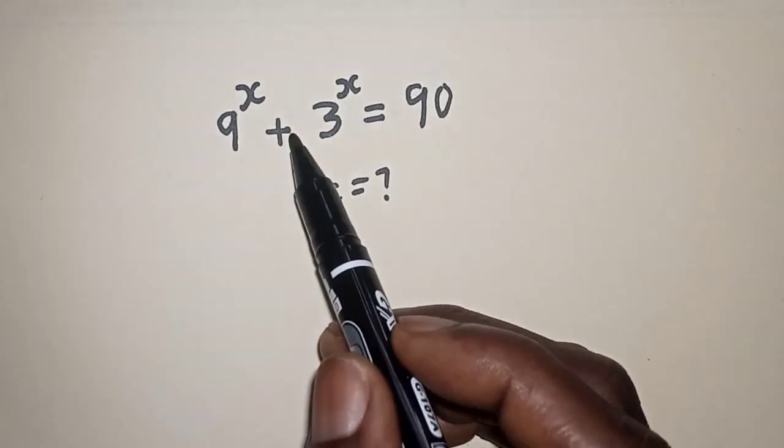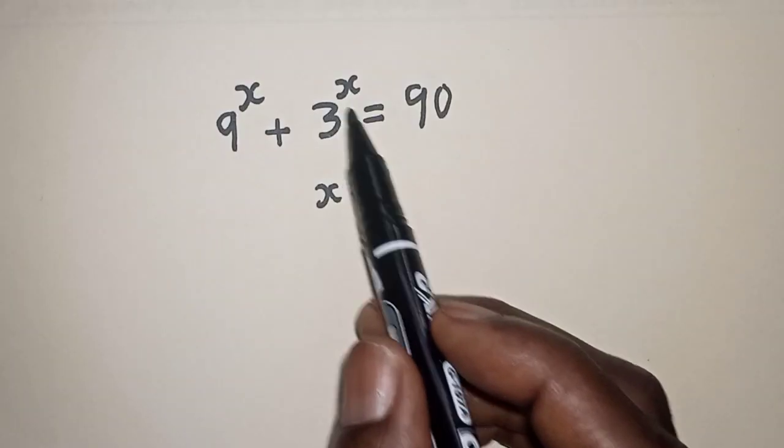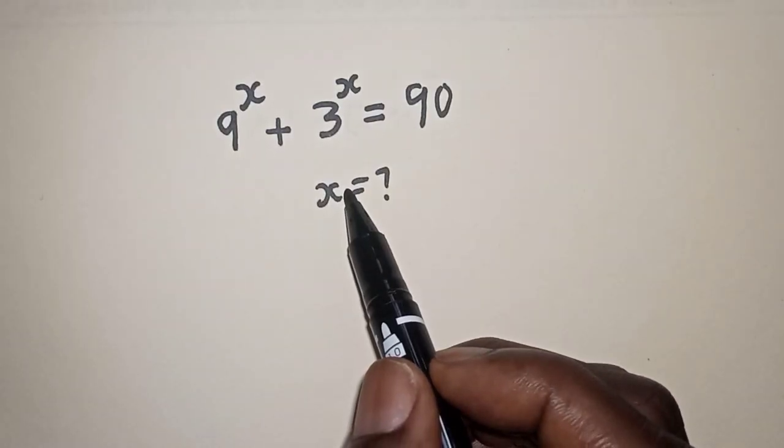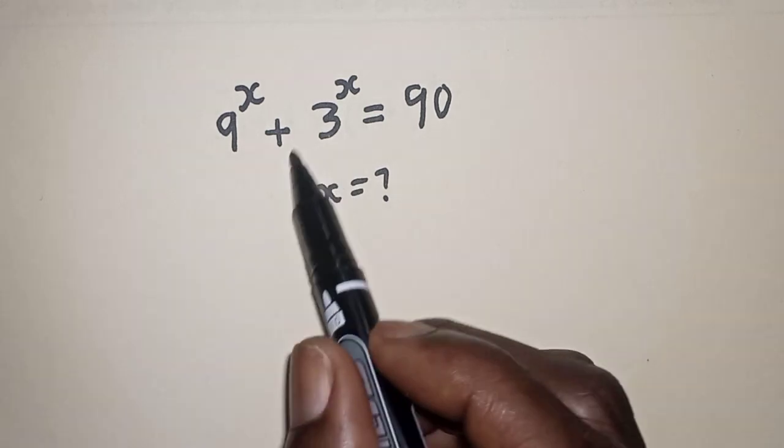9 raised to power s plus 3 raised to power s is equal to 90. What is the value of s?